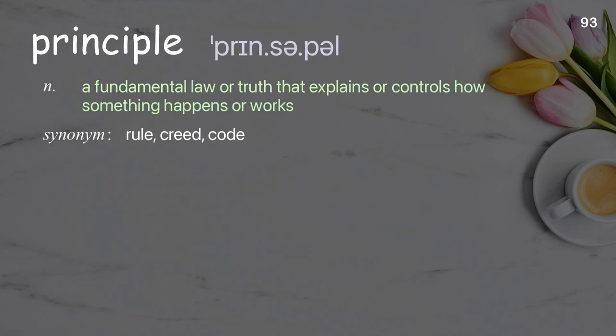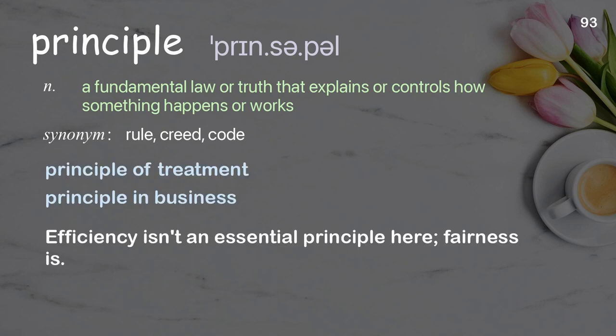Principle: A fundamental law or truth that explains or controls how something happens or works. Examples: Principle of treatment, Principle in business. Efficiency isn't an essential principle here, fairness is.